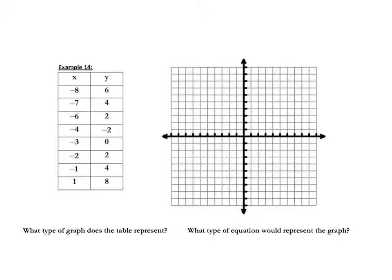Let's plot the next set of points: (−8, 6), (−7, 4), (−6, 2), (−4, −2), (−3, 0), (−2, 2), (−1, 4), and (1, 8). Students often struggle knowing whether to make this a U-shape or a V-shape, but if we look at the graph we can make straight edges connecting the points, so this is an example of absolute value.